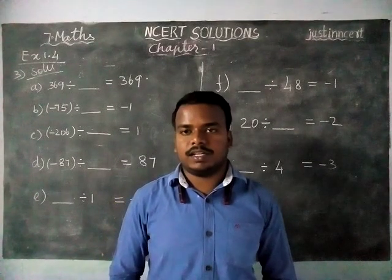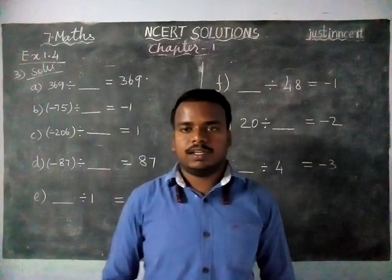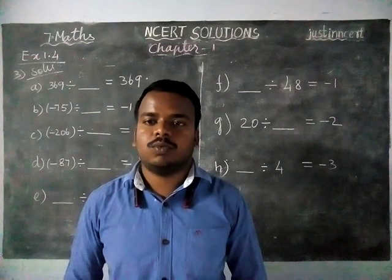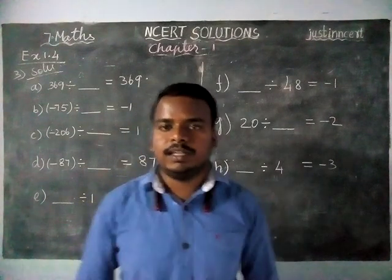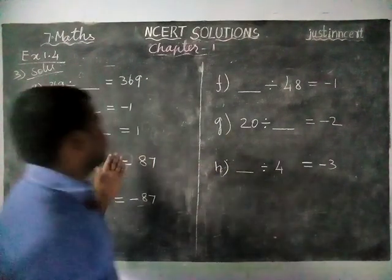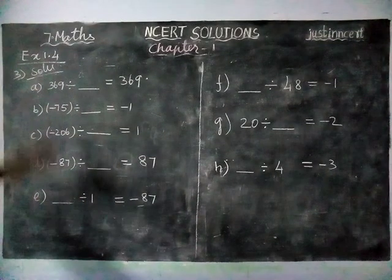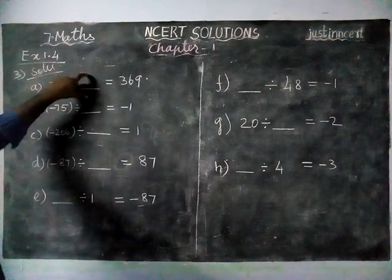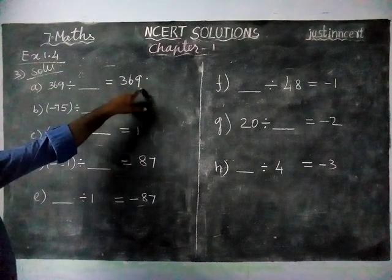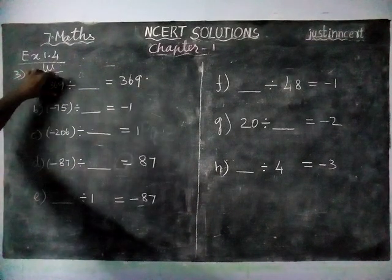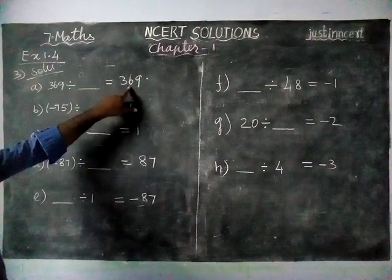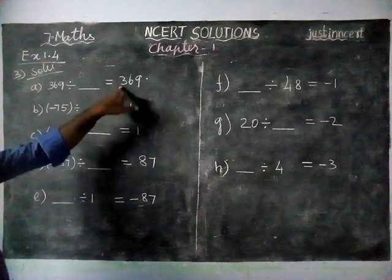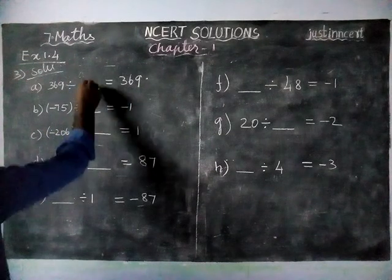Hi students, welcome to NCRT Solutions. In this video we are going to see 7th standard maths Exercise 1.4, third question. They have given some fill-ups we have to fill in using division. 369 divided by an unknown number is equal to 369. When you divide a number by one, you get the same number, so here the divisor is 1.